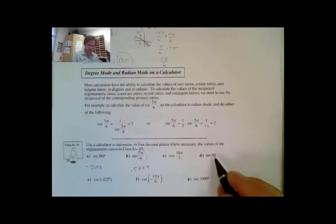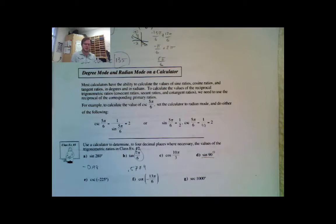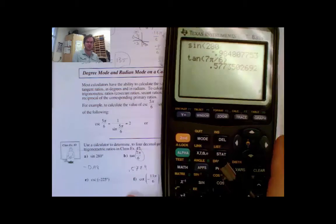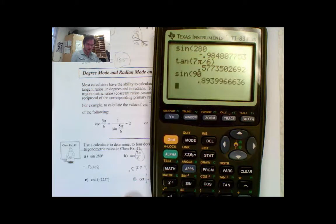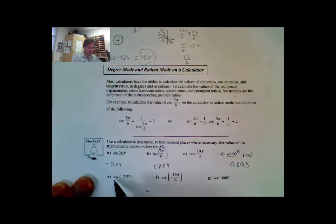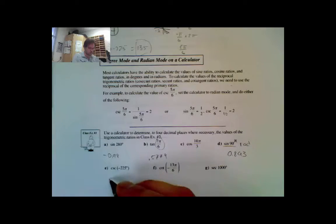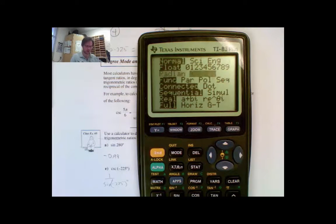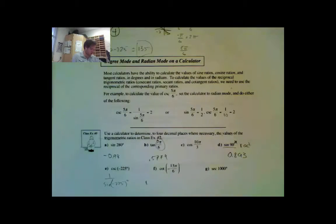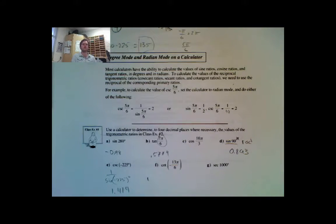Now I'll skip to sine 90 — with no degree sign, I automatically assume this is in radians. My calculator is still in radians mode, so I enter sine 90 and get 0.8935. For cosecant negative 225°: this has a degree symbol, so it's in degrees. I change mode to degrees and enter 1 ÷ sin(−225) to get 1.4142.